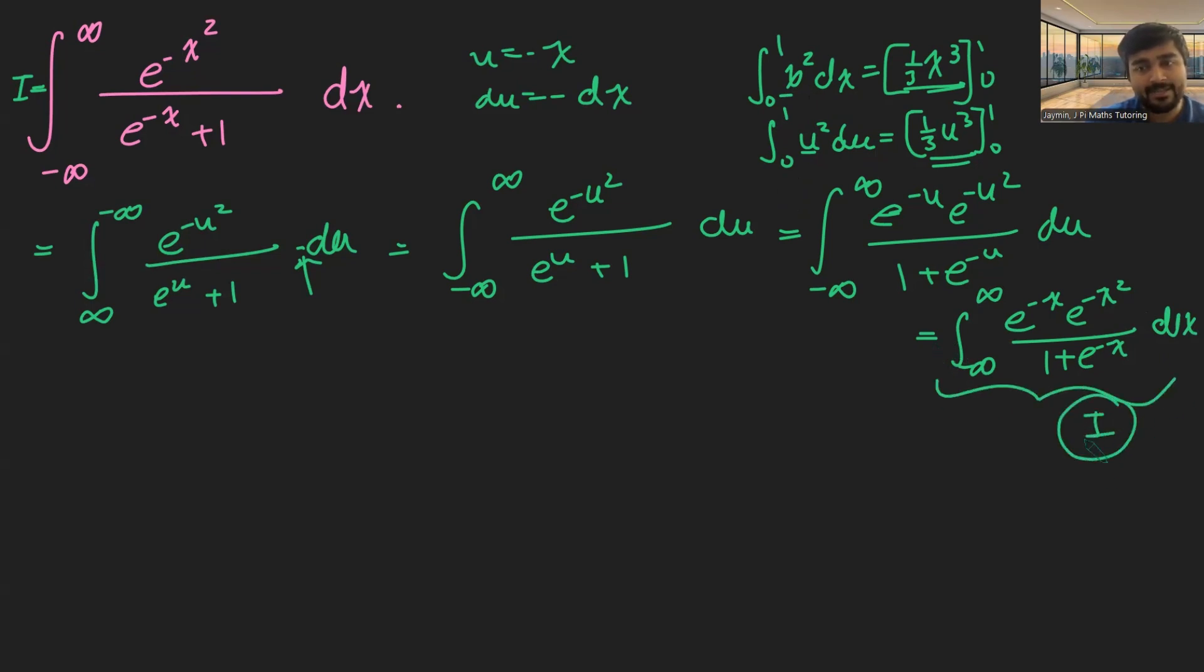So what I'm going to do now is add this i with this i, and that's going to give me 2i. And then that's going to be the integral from minus infinity to infinity, because if I add two integrals and I have the same limits, I can bring them into 1.